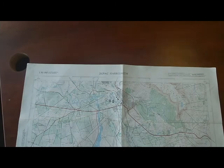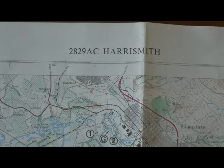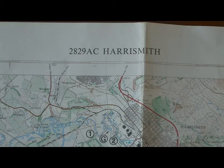In this lesson, we're going to be looking at the map reference number on our 1 in 50,000 topographic series. If I zoom into that, it's found at the top center of the map, and we see that in this case the map reference number is 2829AC, and the name of the map is Harrismith.